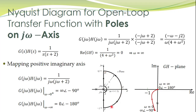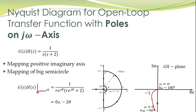For the bigger semicircle, we use S = R·e^(jθ), which describes this bigger semicircle. Substituting that into the transfer function, we get 1 divided by R·e^(jθ) multiplied by R·e^(jθ) — the constant 2 can be ignored. Since R tends to infinity, 1 divided by infinity is 0, and the angle is minus 2θ. So the mapping of this entire semicircle is a single point: 0 at angle minus 2θ — that is, a vector of length 0 rotating from angle minus π to π.